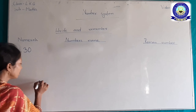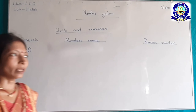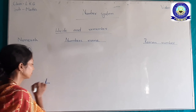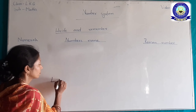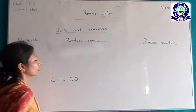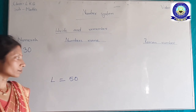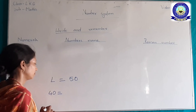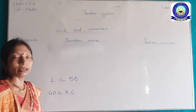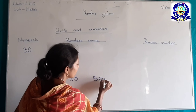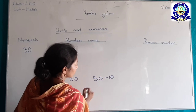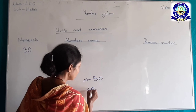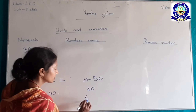और 40 का, 50 का हम लोग आगे पढ़ेंगे, इसके बाद वाले वीडियो में। 50 का L होगा — 50 का L, इसे हमें याद करना होगा। और 40 का XL इसलिए होगा कि 50 से हम minus 10 करेंगे — 50 minus 10 equal 40, तो हम L से minus X करेंगे।